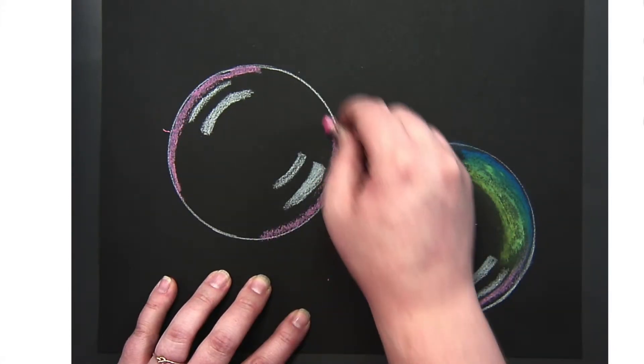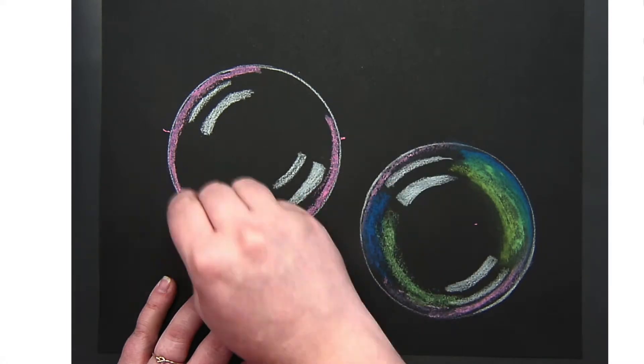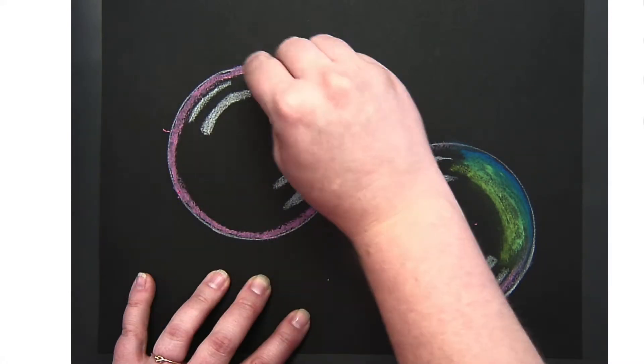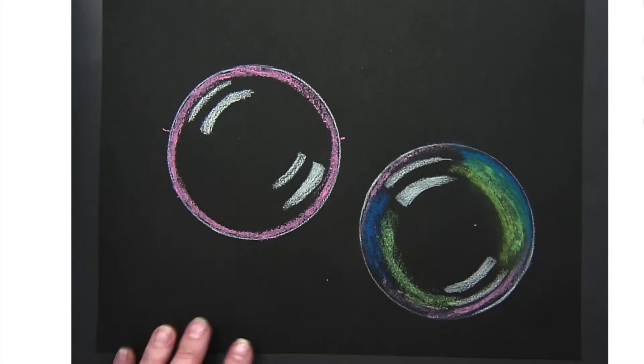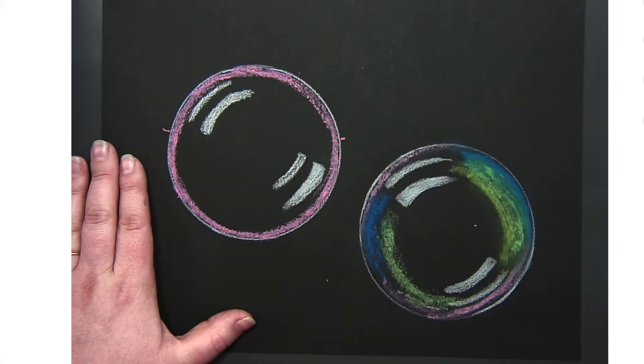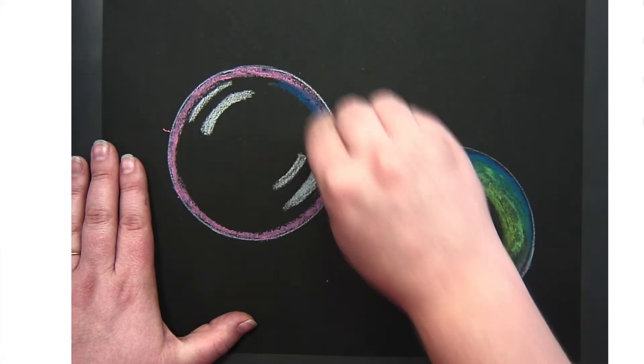Next I use pink oil pastels all the way around the edge here, but you can choose any color. You usually get a rainbow effect in bubbles, so you can start with any colors you like.